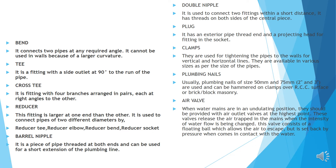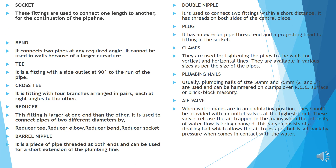Plug: it has an exterior pipe thread and a projecting head for fittings at the socket. Clamps: used for tightening pipes to the walls for vertical and horizontal lines; available in various sizes. Plumbing nails: usually sizes 50 to 75 mm, can be hammered for a clamp over RCC. Air valve: when water mains are in undulating position, they should be provided with an air outlet valve at the highest point. These valves release air trapped in the mains when the intensity of water flow changes. The valve consists of a floating ball which allows the air to escape but is set back by pressure when it comes into contact with the water. Socket: used to connect one length to another for continuation of the pipe. Elbow: connects two pipes at 90 degrees and has a short extension.